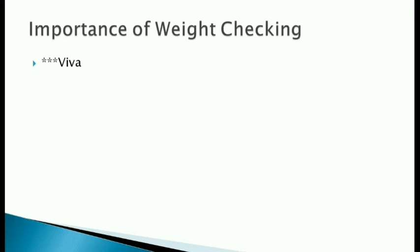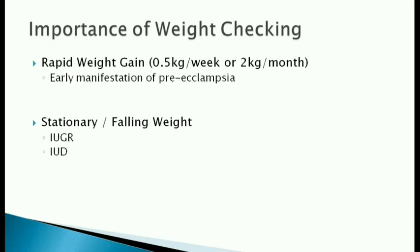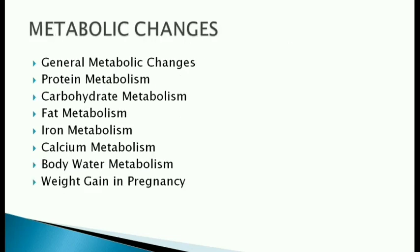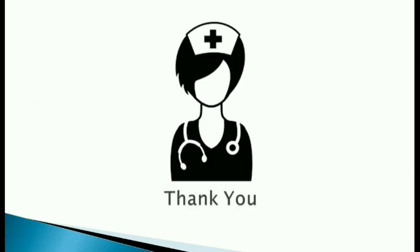Why do we check the weight of antenatal mothers? During every visit, your examiner may ask about the significance or importance of weight checking during pregnancy. Rapid weight gain of 0.5 kg per week or 2 kg per month can be an early manifestation of preeclampsia. Stationary or falling weight can indicate intrauterine growth restriction or intrauterine death of the fetus.